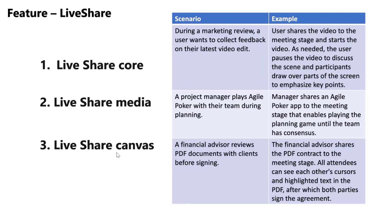Finally, there is Live Share Canvas. As the name suggests, think of it as a canvas that gets reflected on the meeting stage of your app where you can annotate things. You can add a collaborative canvas on top of your app's center stage, and on that you can use pens, highlighters to highlight things, laser pointers to point at things, and real-time cursors to follow along with someone. All those capabilities are enabled using Live Share Canvas. So the three main capabilities — Live Share Core, Live Share Media, and Live Share Canvas — are all available now on both desktop and mobile.